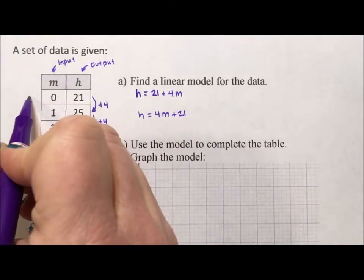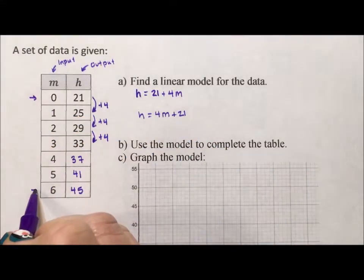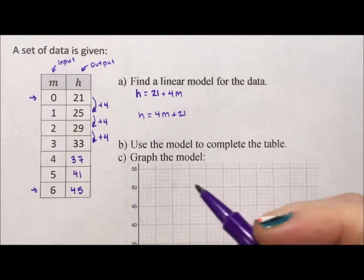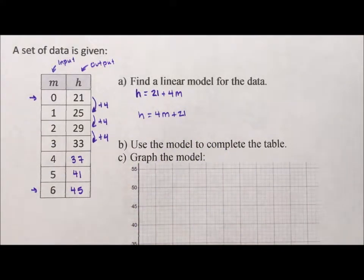My suggestion is graph the first and the last. If you graph the first two, what happens is they're really close together. And when you line up your ruler, you're probably going to swing out on the far end of your graph. And it's not going to be as accurate as it should be.